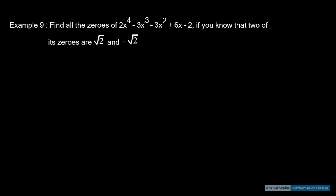Example 9: Find all the zeros of 2x⁴ - 3x³ - 3x² + 6x - 2 if you know that two of its zeros are √2 and -√2। यह हर paper में आता है — superstar question है इस chapter का, 4 marks का।